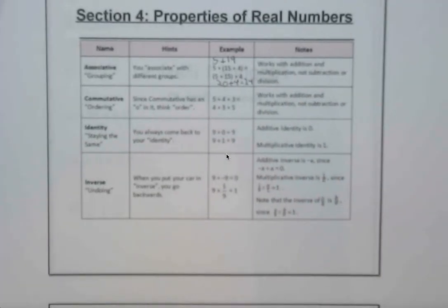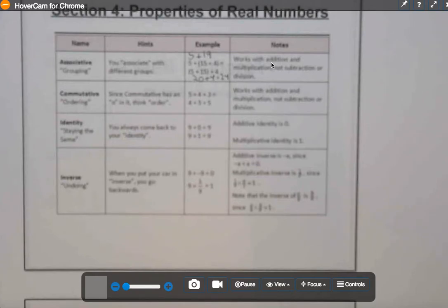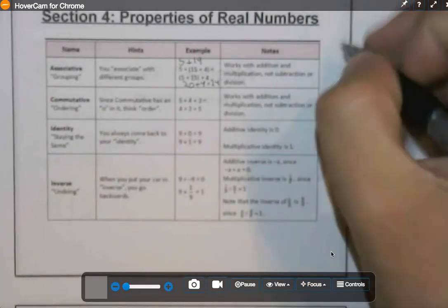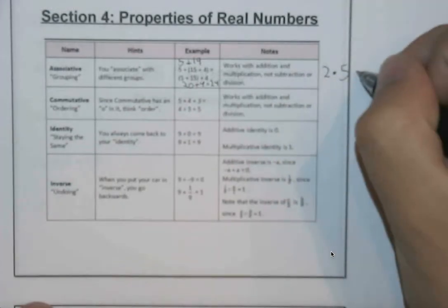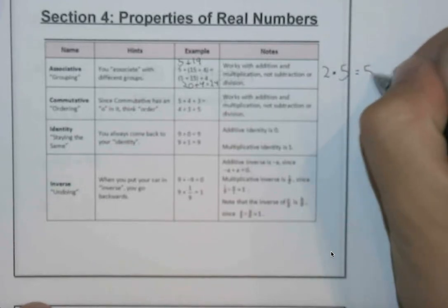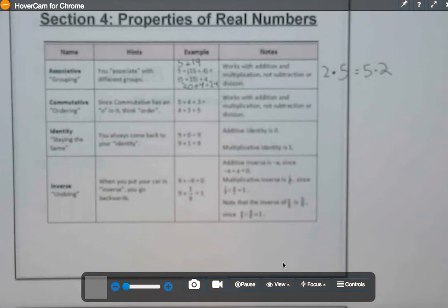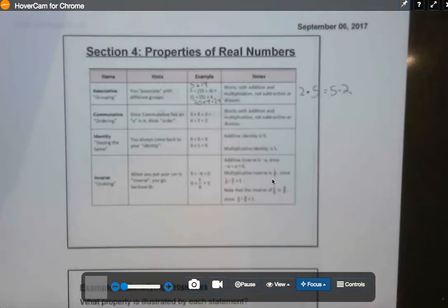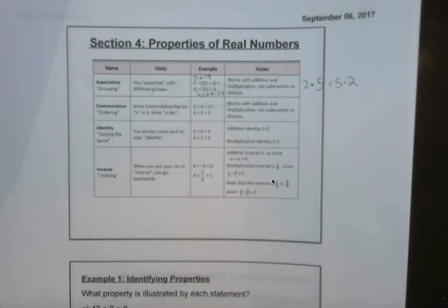They also note that this works with addition and multiplication, so although the example here is addition, we could also see this in multiplication, where we might see something along the lines of 2 times 5 is the same equivalency as 5 times 2. So that's one way that we could approach this. Be on the lookout for the multiplication version. That comes up every now and again.